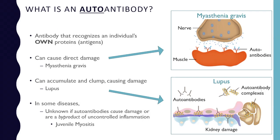Autoantibodies can also cause destruction in other ways, like clumping together as they do in lupus. In the bottom picture, you can see autoantibodies binding to DNA and causing clumping of all of these complexes, and that's causing organ damage. In this case, the kidney is being damaged.